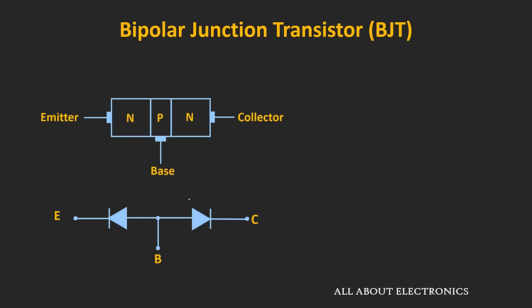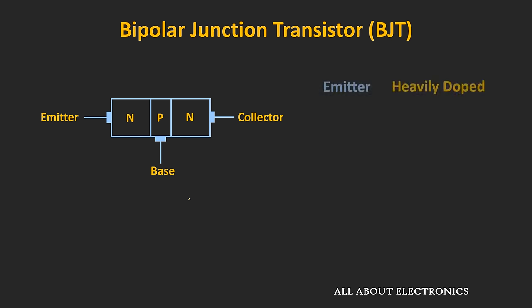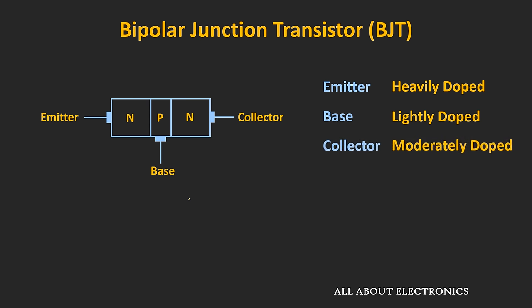But in case of the BJT, there is actually an interaction between the two regions, so connecting two back-to-back diodes won't behave like a BJT. Regarding internal construction: the emitter is heavily doped and its function is to supply electrons — that is why it is called the emitter. The base is lightly doped, and the collector is moderately doped, with doping concentration between the emitter and the base. The base region is much narrower compared to the other two regions, and the collector region is wider because its job is to collect the electrons supplied by the emitter — that is why it is called the collector.